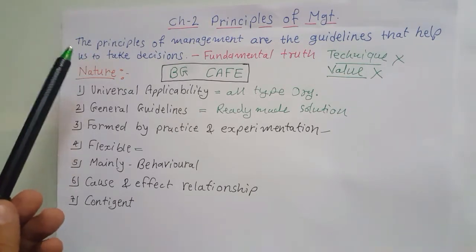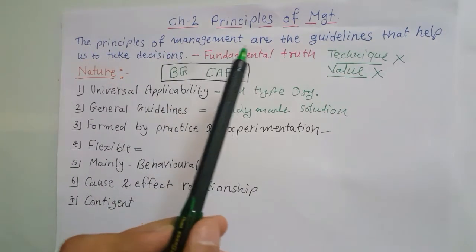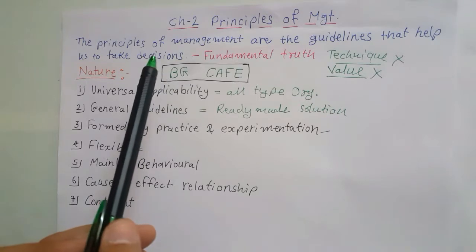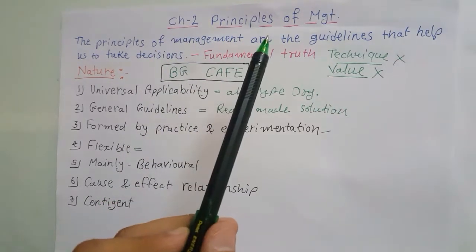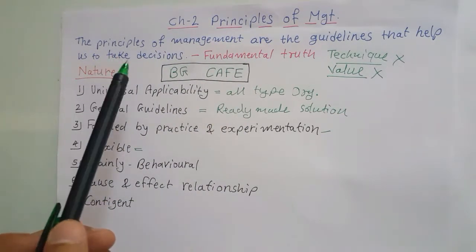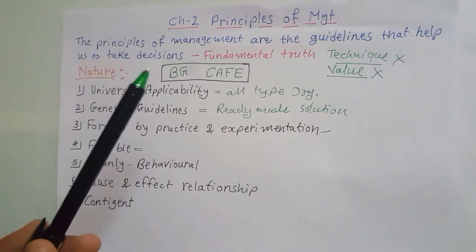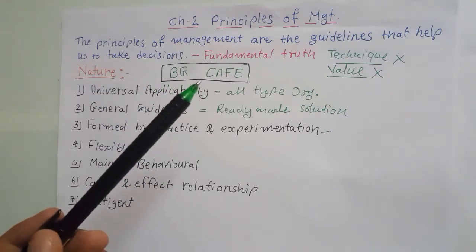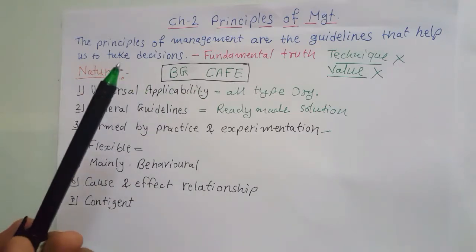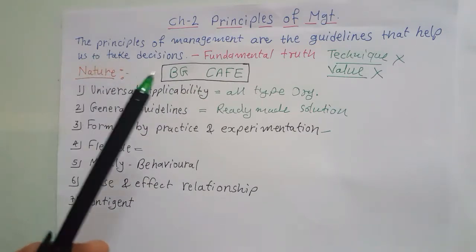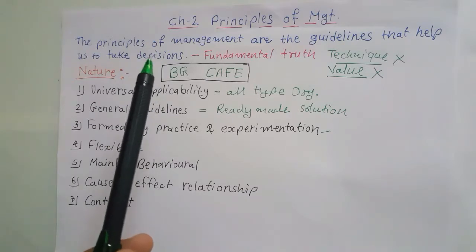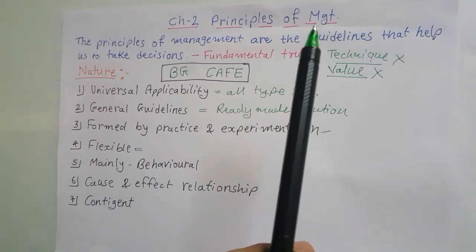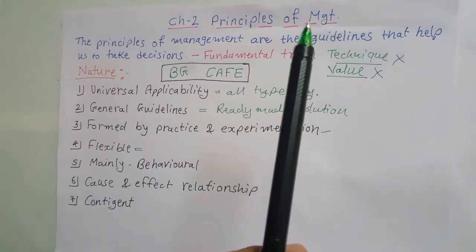Let's try to understand the meaning first. The principles of management are the guidelines that help us to take decisions. That means if you are a manager, you can take the help of these principles of management to take decisions under different conditions or different situations of the organization. So in our organization, we are working in a dynamic environment and we always have to take some decisions. A manager takes decisions at every step, so while taking decisions under different conditions, he can take the help of these principles of management and take decisions scientifically.